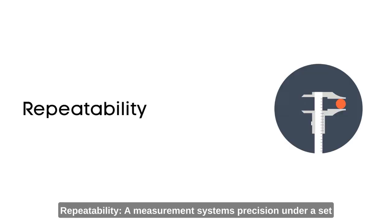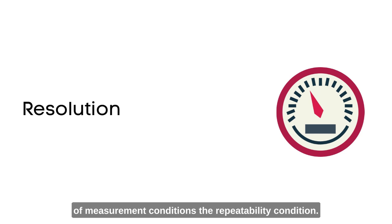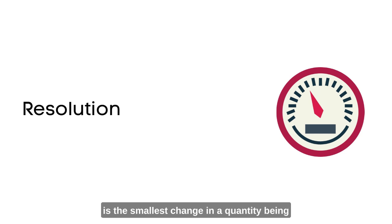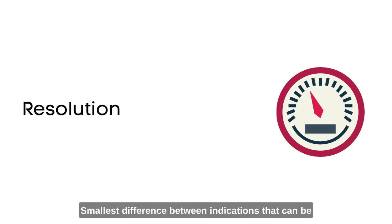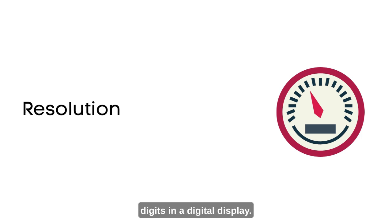Repeatability: A measurement system's precision under a set of measurement conditions. Resolution: The smallest change in a quantity being measured, or in a displaying device, the smallest difference between indications that can be meaningfully distinguished, or the number of digits in a digital display.